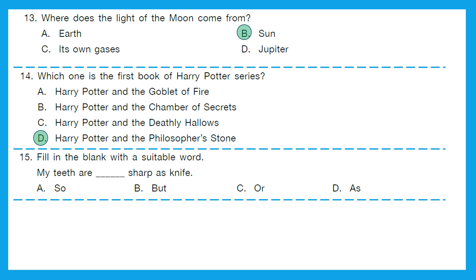Question 15: Fill in the blanks with a suitable word. My teeth are ___ sharp as knife. Is it so, but, or, or as? The right answer should be 'as' — my teeth are as sharp as a knife. We are comparing sharpness, so we use 'as'. Option D is the right answer.